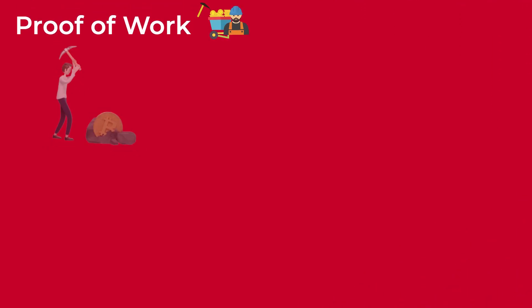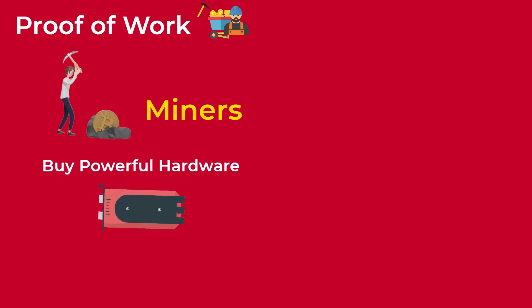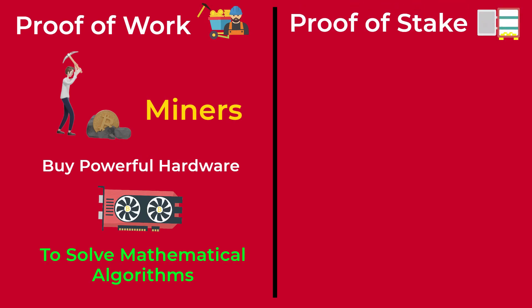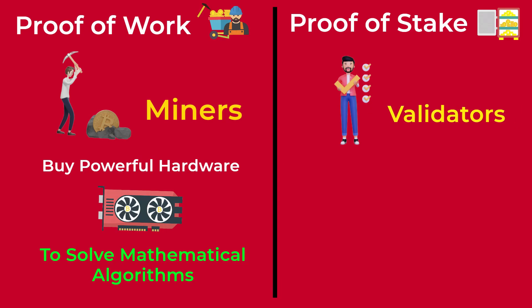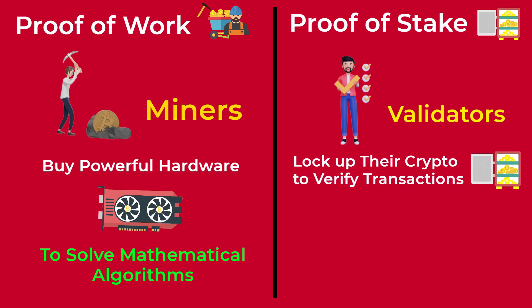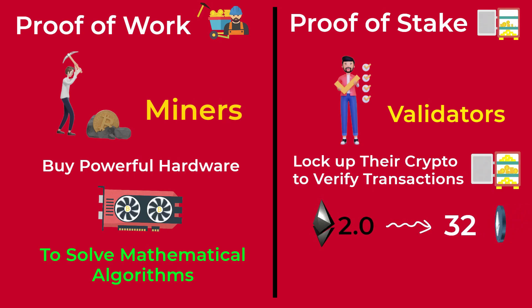To be able to verify transactions in the proof-of-work system, miners buy very powerful hardware devices to solve complex mathematical problems and get the mining rewards. In proof of stake, on the other hand, the people who verify transactions are not called miners — they are called validators. To be able to verify transactions and earn rewards in a proof-of-stake system, they need to lock up some of their own crypto into the network. In Ethereum 2.0, for example, validators need to lock up 32 Ether in order to verify transactions and create new blocks on the Ethereum blockchain.